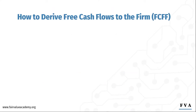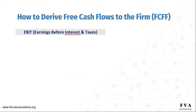How do we derive free cash flows to the firm? The starting point to calculate free cash flow to the firm is EBIT — earnings before interest and taxes. EBIT is before deducting interest, so EBIT is earnings attributable to both debt and equity holders. Debt holders will get their interest. But EBIT is an accounting earnings figure, and we need to go from accounting earnings to cash flows. Accounting earnings are very different from cash flows due to things like accruals, receivables, and the capitalization of assets. Hence, we need to make certain adjustments to take the EBIT and arrive at free cash flows to the firm.